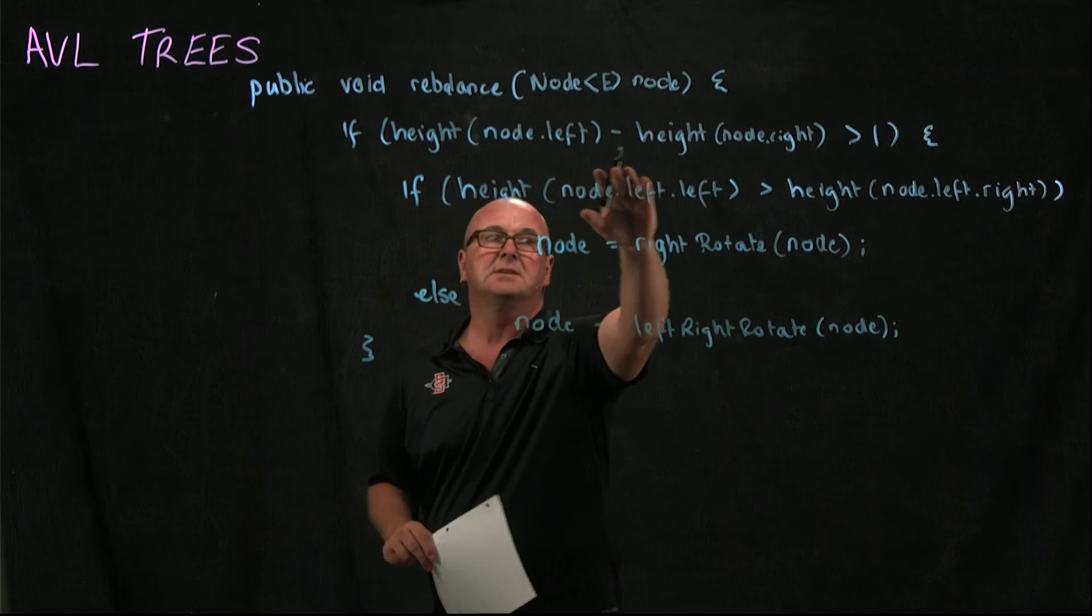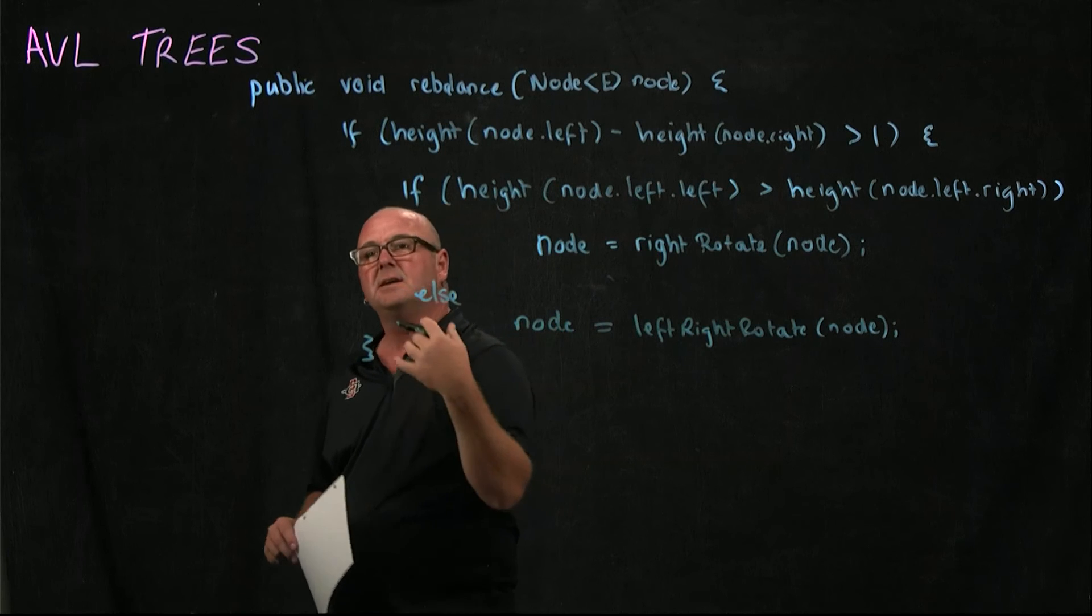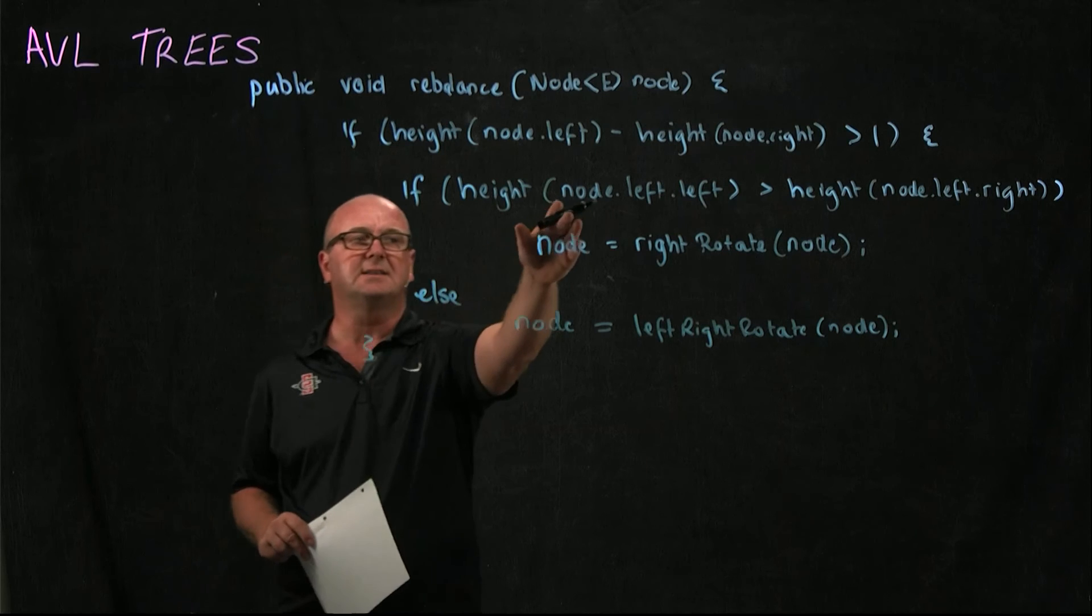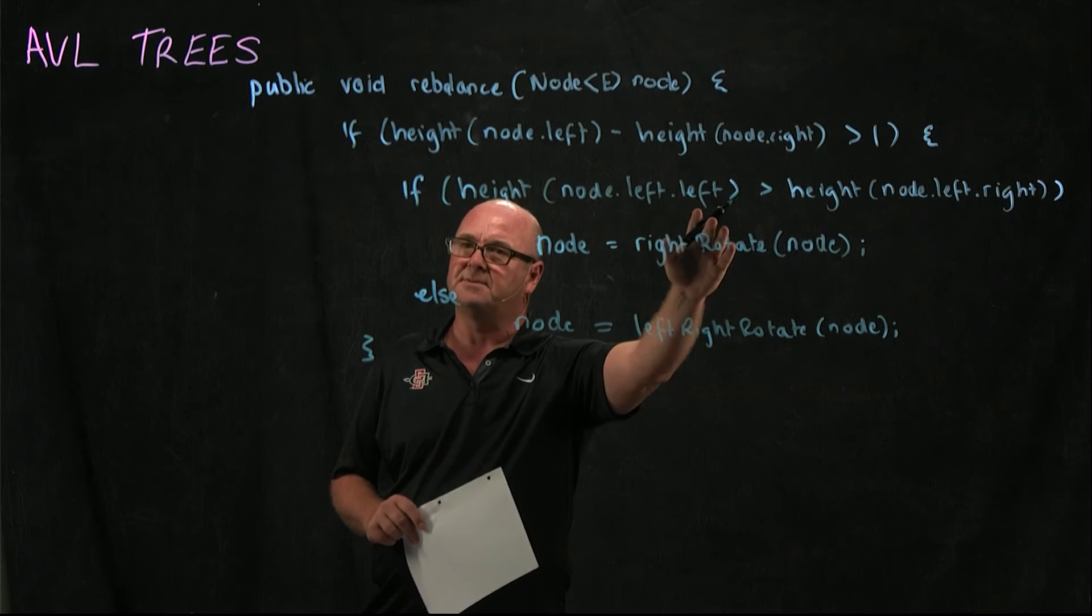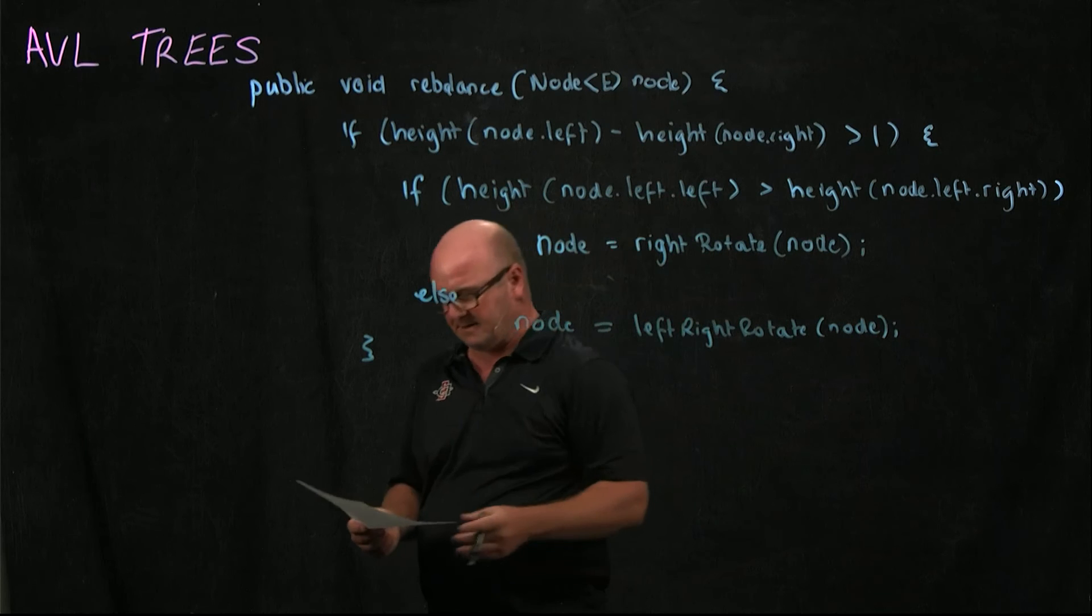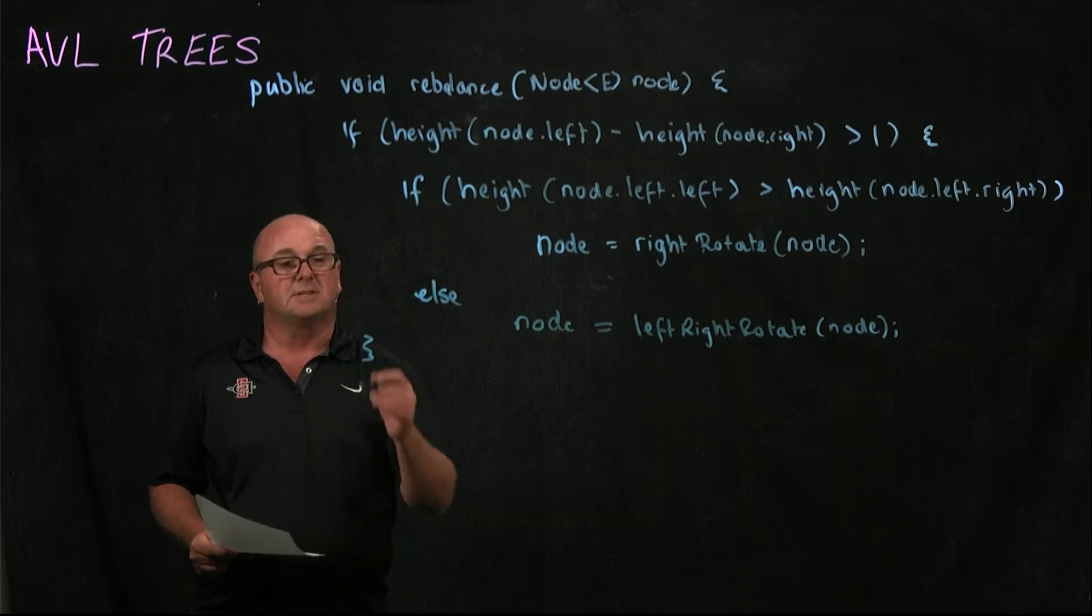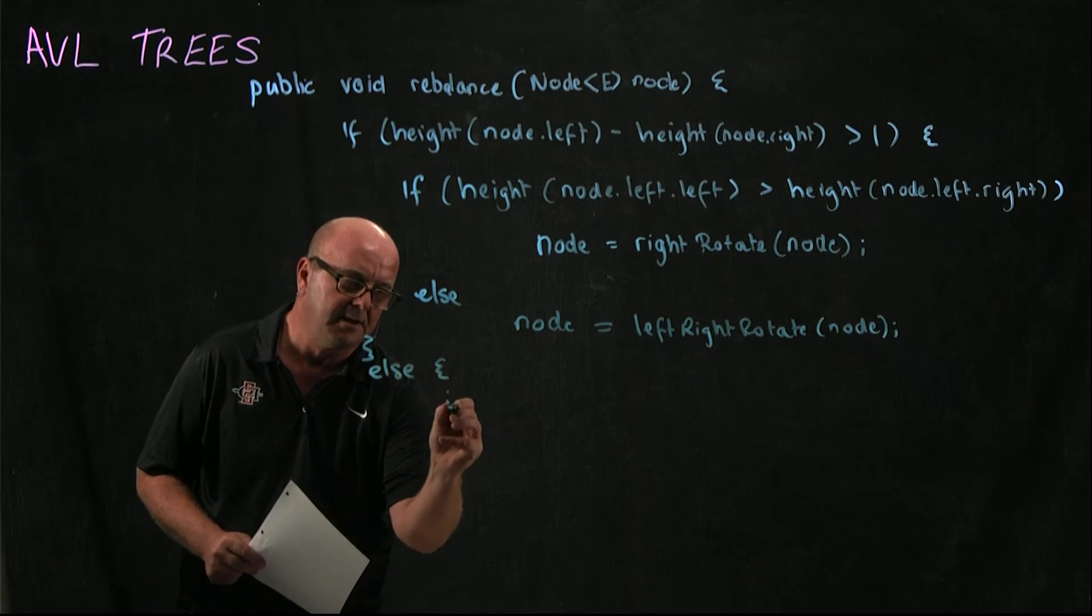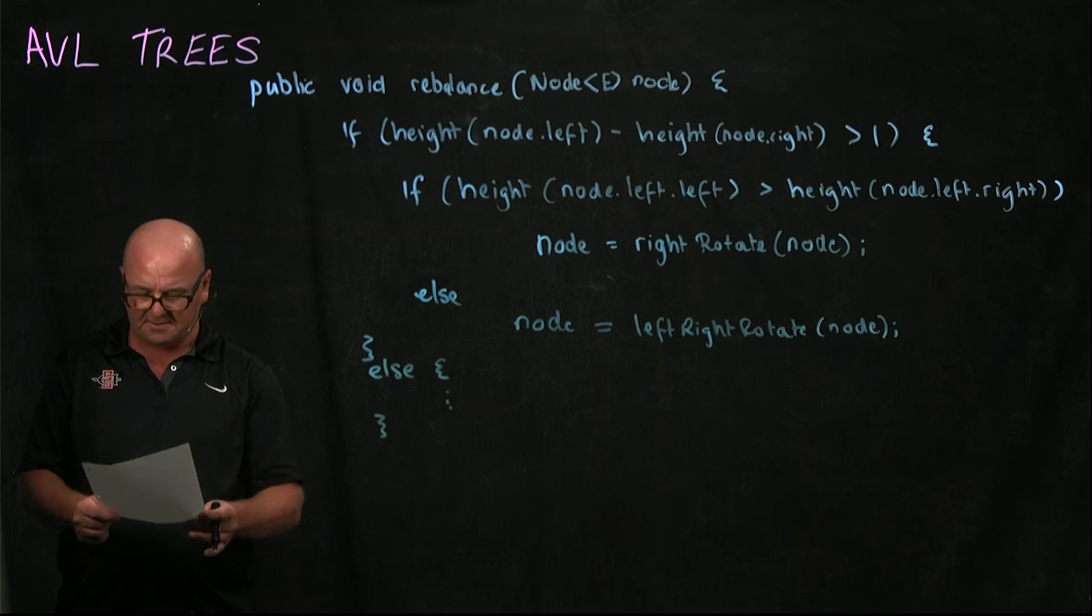If node.left is smaller than node.right, then we need to do the same thing, but on the right subtree. And so it's going to be exactly the same code except instead of node.left.left, it'll be node.right.left. Instead of node.left.right, it'll be node.right.left. Sorry, node.right.right. And so you do the same block of code here, where you balance the right subtree of the node that we've been given.